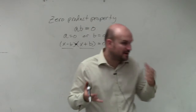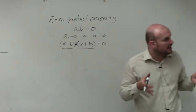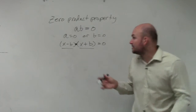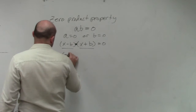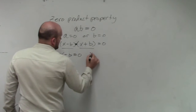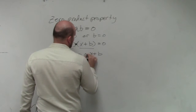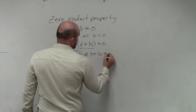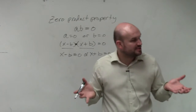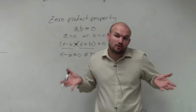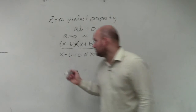So when you have the zero product property — when you have two expressions or two terms multiplied to equal zero — you basically just set them each equal to zero. What's nice about the zero product property is that once you set your two expressions equal to zero, because you know one or both of them have to equal zero, you can now go ahead and solve.